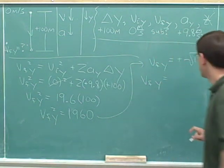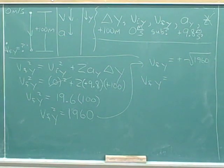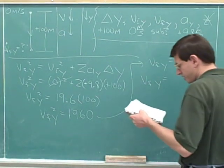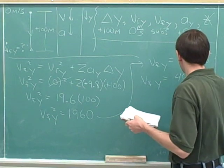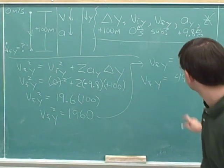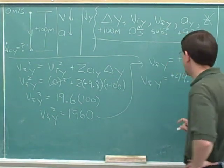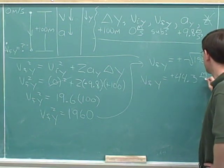We can use our calculator and we'll find that the positive square root of 1960 is approximately 44.3. Again, this is our positive root. And you can put in the units, meters per second.